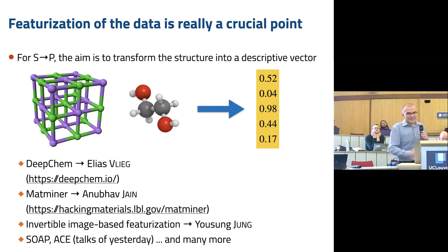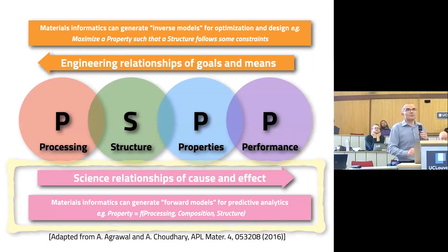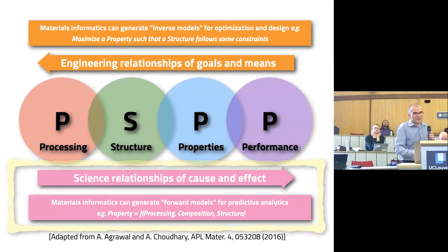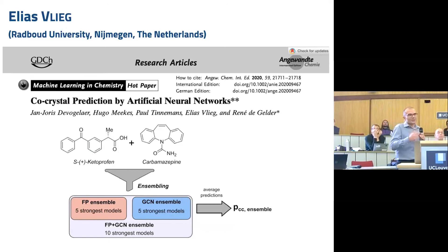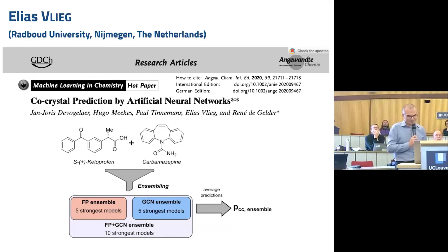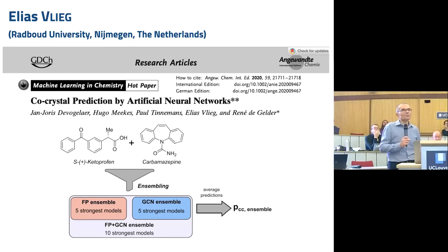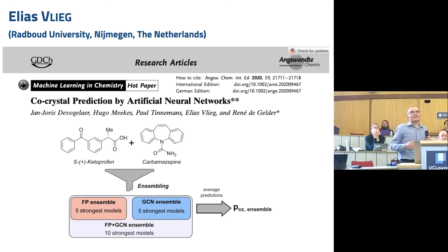In this afternoon session, we will first have several talks that deal with the forward relationship going from cause to effect. The first talk by Elias Vlique is coming from the Radboud University in Nijmegen in the Netherlands, and he's going to speak about how artificial neural networks can be used to make predictions about co-crystals. The idea is that you have two molecules and you see whether or not they can form a co-crystal together.